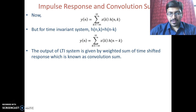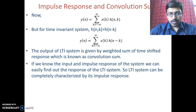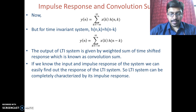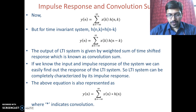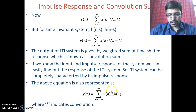This equation is known as the convolution sum. If we know the input and the impulse response of the system, we can easily find the response of the LTI system. An LTI system can be completely characterized by its impulse response. The equation is also written as y(n) = x(n) * h(n), where the asterisk (*) indicates convolution. This is the formula for the convolution sum.